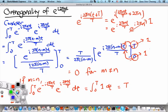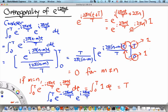Therefore, we can combine the two results into a single term and write the integral from 0 to T of e to the minus i 2π nt over capital T times e to the i 2π mt over capital T dt equals T